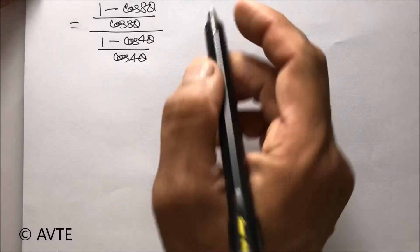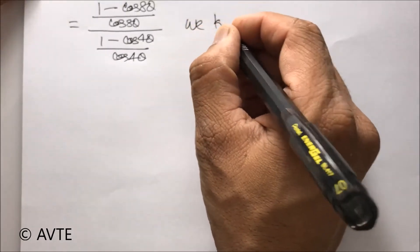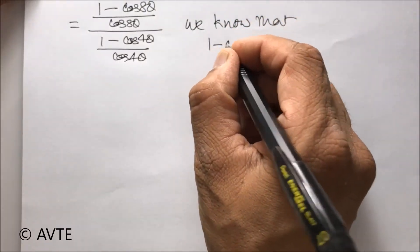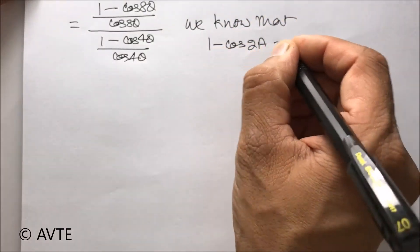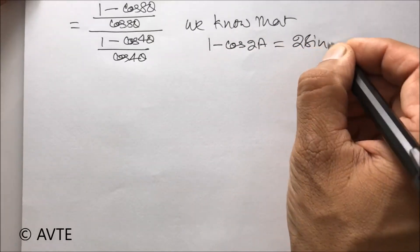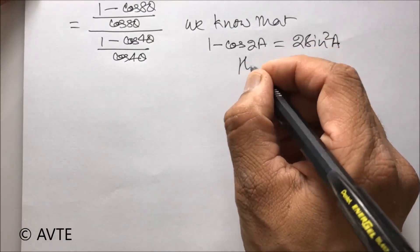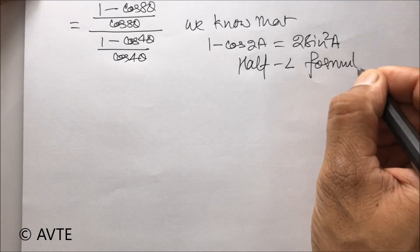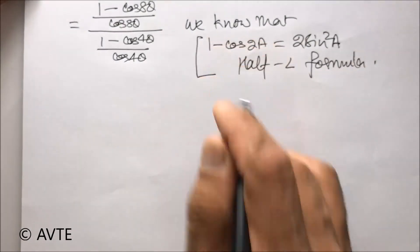Now, this is the expression which we have after the LCM. It is very important to write and to understand that 1 minus cos 2a is 2 sine square a. This is known as half angle formula. Without this formula, it will not be possible to solve this question.